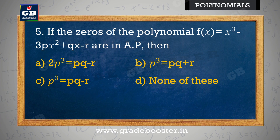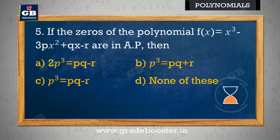If the zeros of the polynomial f(x) = x³ − 3px² + qx − r are in AP, then: yadi polynomial f(x) = x³ − 3px² + qx − r ke zeros AP mein hain — a) 2p³ = pq − r, b) p³ = pq + r, c) p³ = pq − r, d) none of these.